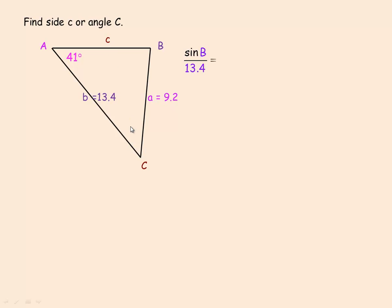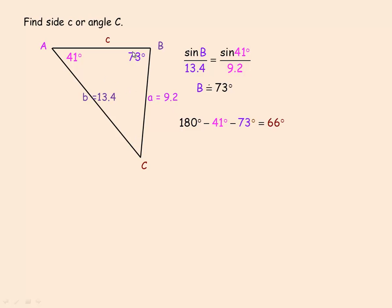What you can do is find angle B first, even though you weren't asked to. Once angle B is found to be 73 degrees, you have an angle-side pair and can use the sine law to find side C. You can also find angle C easily by subtracting the known angles from 180, giving angle C = 66 degrees.